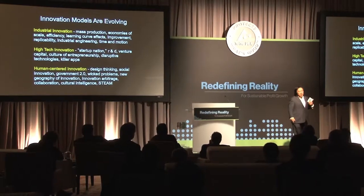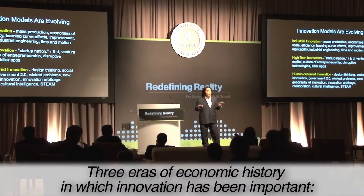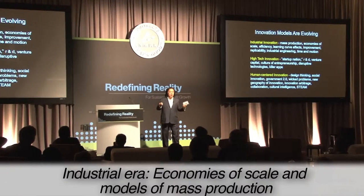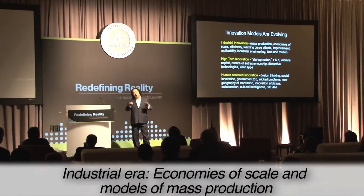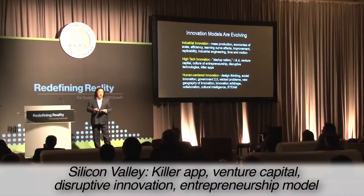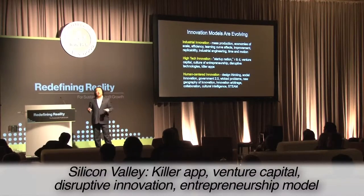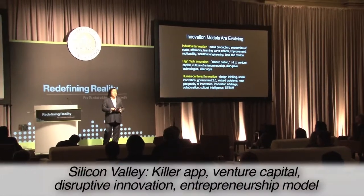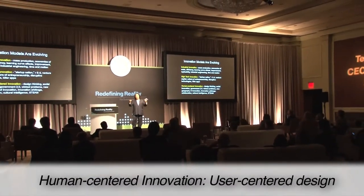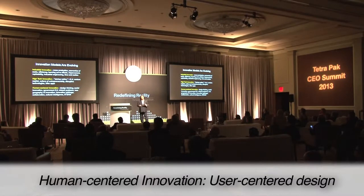It's also complicated because there have been at least three eras of economic history in which innovation has been really important. We start with innovation in the industrial era, where you have economies of scale, somebody invents a production process, you have learning curve effects, and the whole model of mass production. But then you have Silicon Valley — the killer app, venture capital, disruptive innovation, the entrepreneurship model — which everyone is quite interested in. It seems like there's an international delegation almost every day visiting Silicon Valley trying to figure out what the secret sauce is. And then there's what you might call human-centered innovation — user-centered design, big data, new kinds of services, innovation arbitrage.